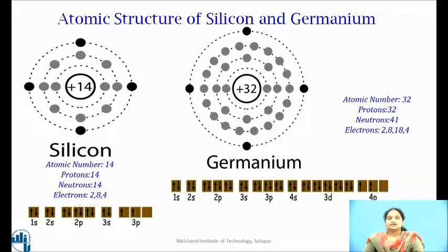Silicon and germanium are elemental semiconductors they belong to fourth A group in the periodic table. Silicon has 14 electrons and electronic configuration is 1s2, 2s2, 2p6, 3s2, 3p2.